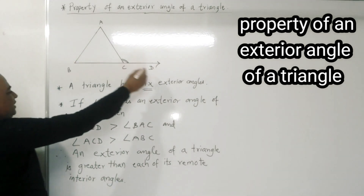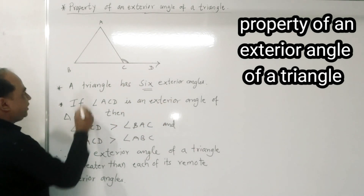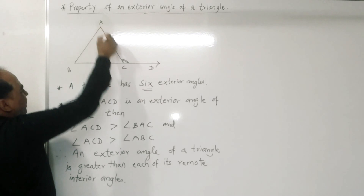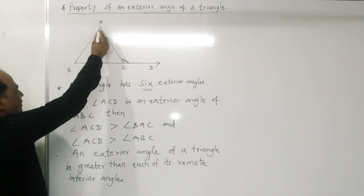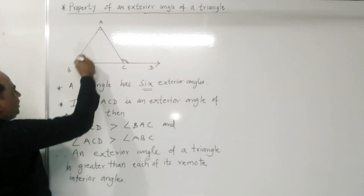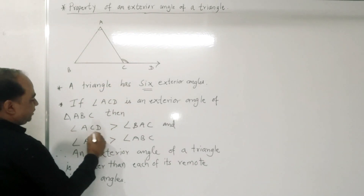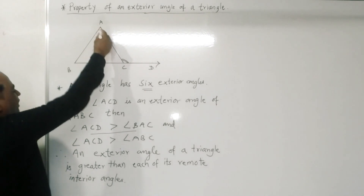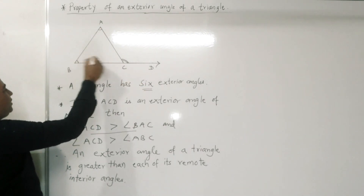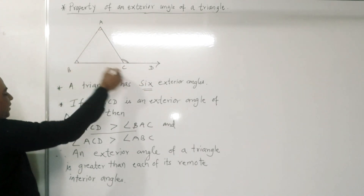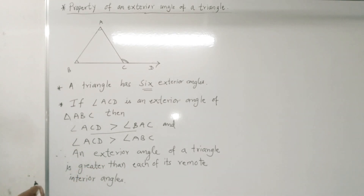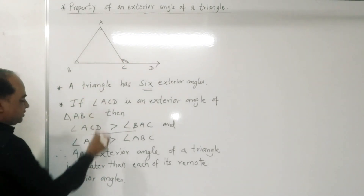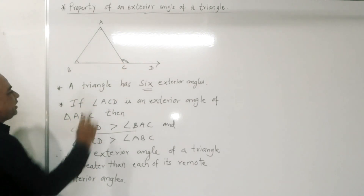The property of an exterior angle is: if angle ACD is an exterior angle of triangle ABC, then angle ACD is greater than angle BAC, and angle ACD is also greater than angle ABC. That is, each exterior angle of a triangle is greater than each of its remote interior angles.